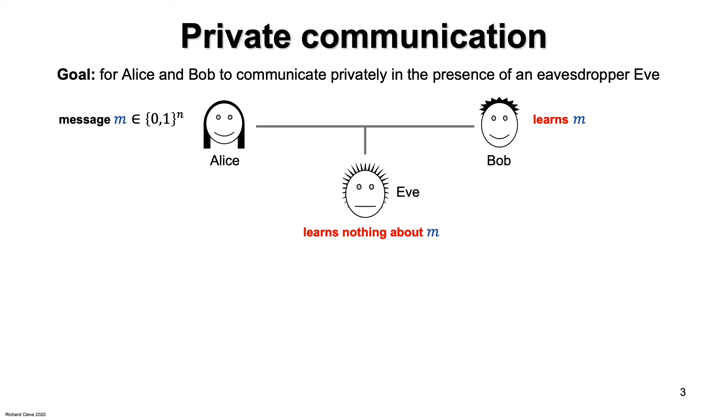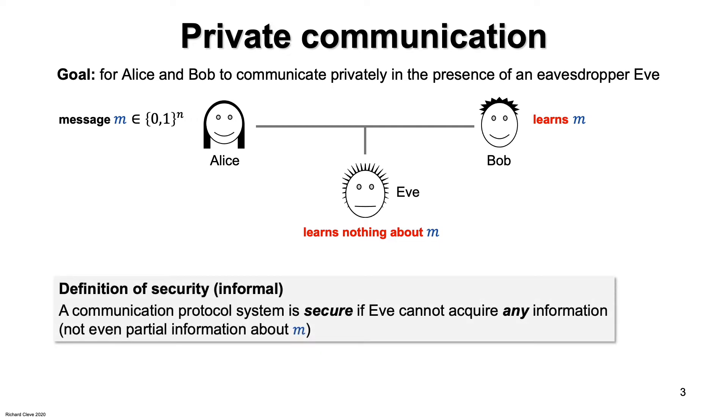If we look at this from Eve's perspective, she would ideally be able to break the system by learning Alice's message entirely. But it might be useful to Eve to even acquire partial information about the message, such as a subset of the bits. So we regard a system as secure if and only if Eve learns nothing at all about the message, not even the 23rd bit or the XOR of all the message bits. The advantage of adopting such a strong definition of security is that it's independent of the context in which the system will be used.